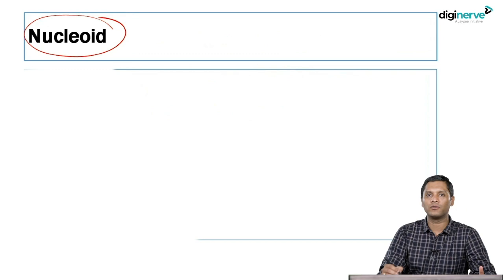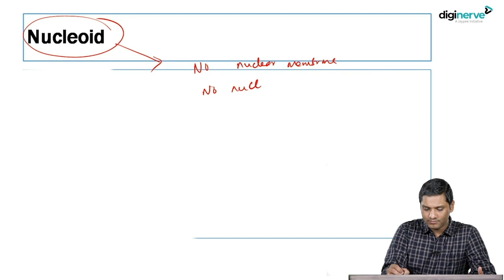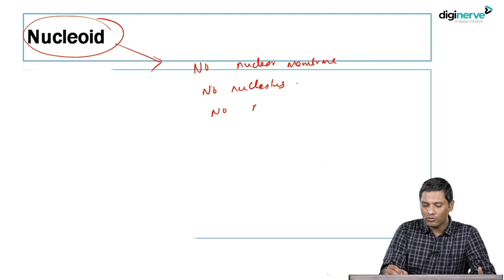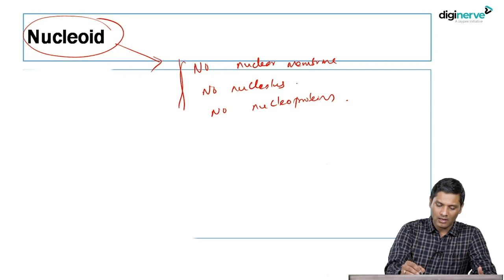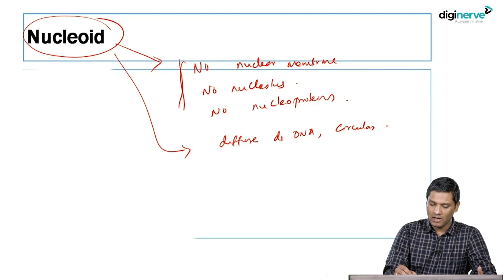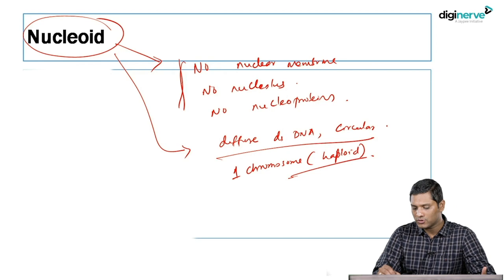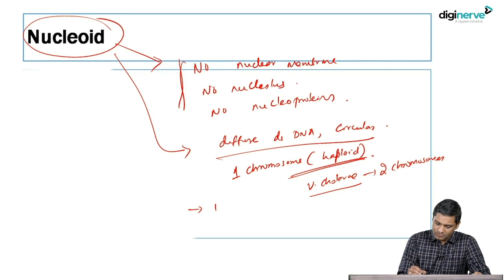The bacterial nucleoid differs greatly from the nucleus of eukaryotes: there is no nuclear membrane, no nucleolus, and no nucleoproteins. The DNA is a diffuse, double-stranded, circular DNA. Bacteria have only one chromosome — in contrast to eukaryotes which have diploid chromosomes, prokaryotes usually have haploid chromosomes. The exception is Vibrio cholerae, which is the only bacterium with two chromosomes. Bacteria divide by binary fission.